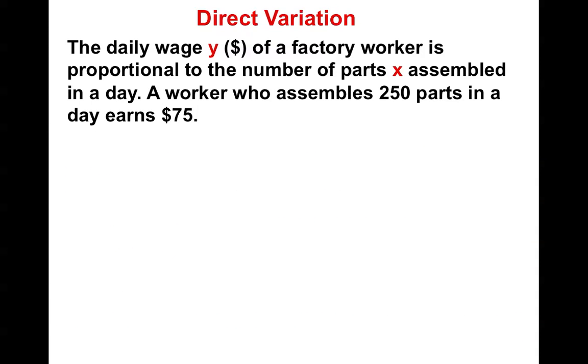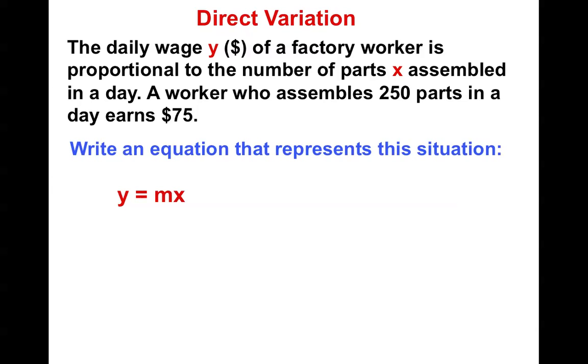Let's try one more. A daily wage of a factory worker, y, is proportional to the number of parts assembled in a day. And the parts assembled is x. So if a worker assembles 250 parts in a day, and they earn $75, well, parts is x, and money is y. So I have the equation, y equals mx. I plug in 75 for y, 250 for x.